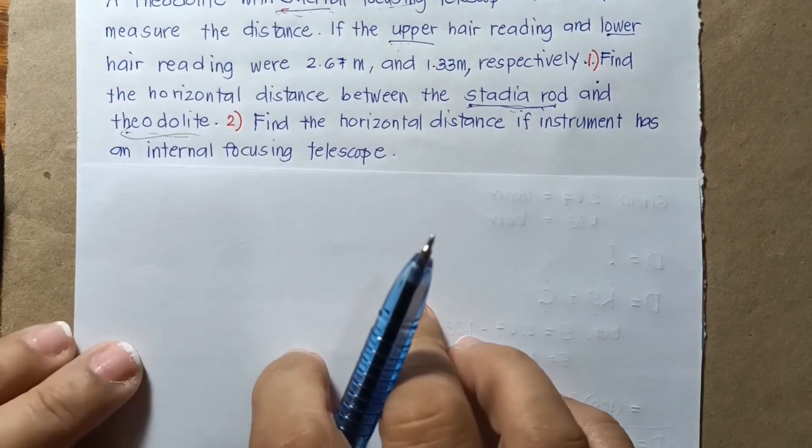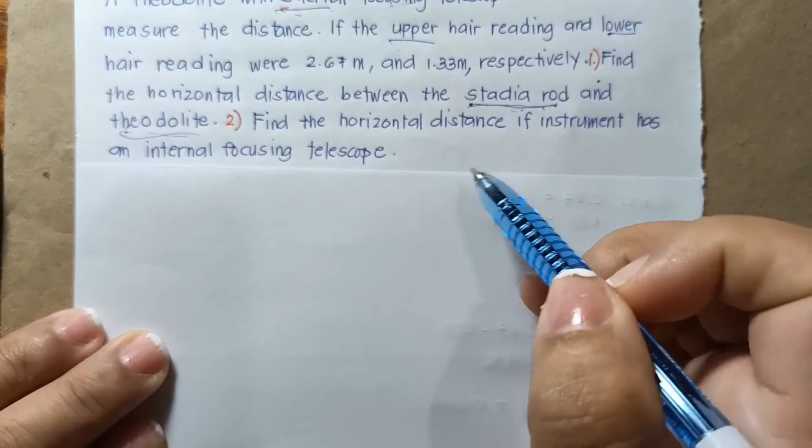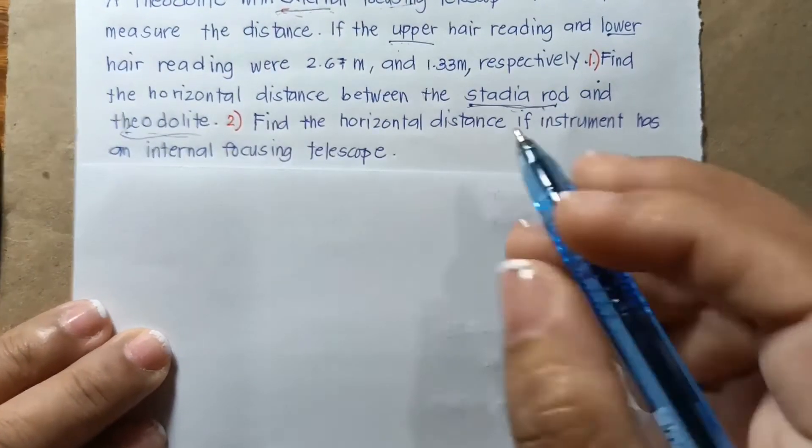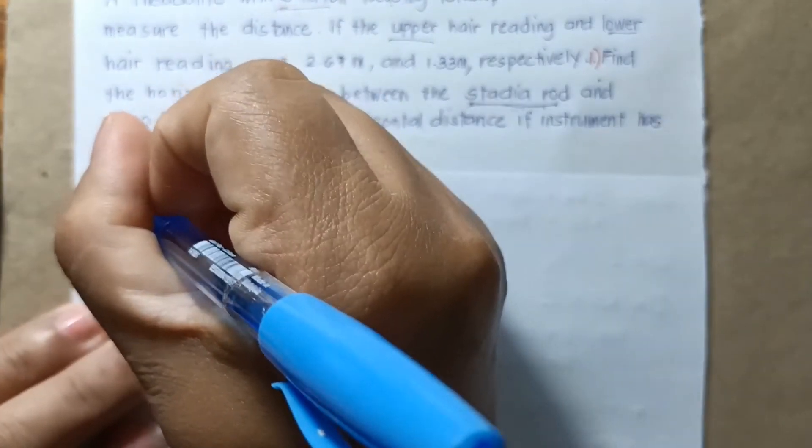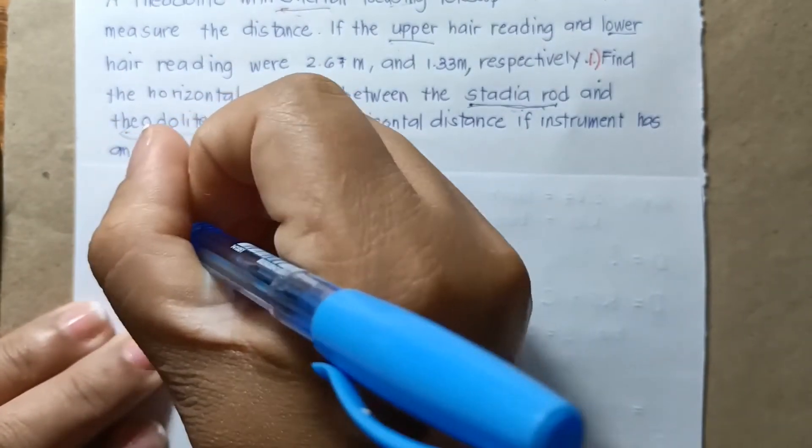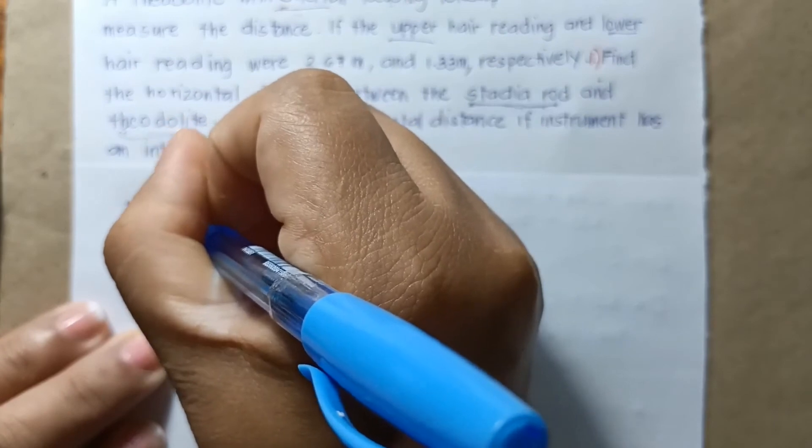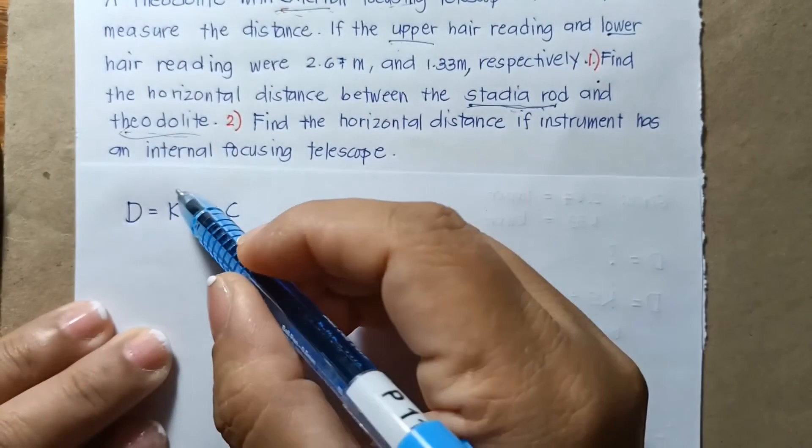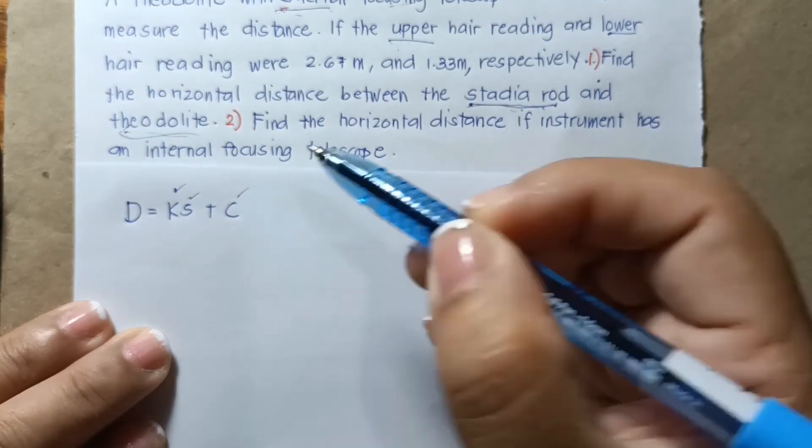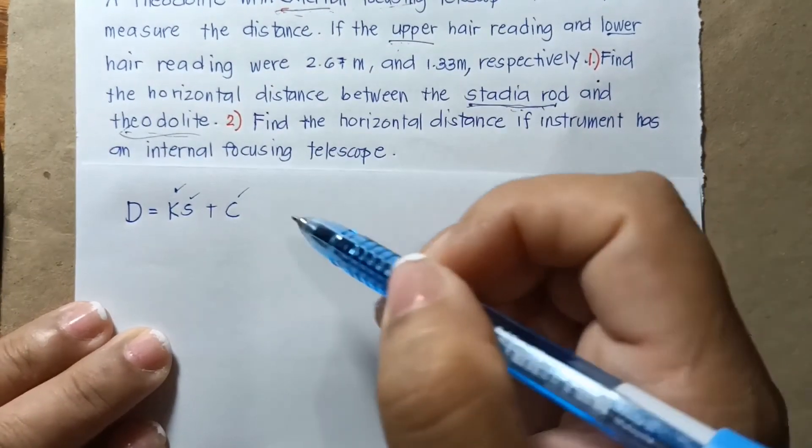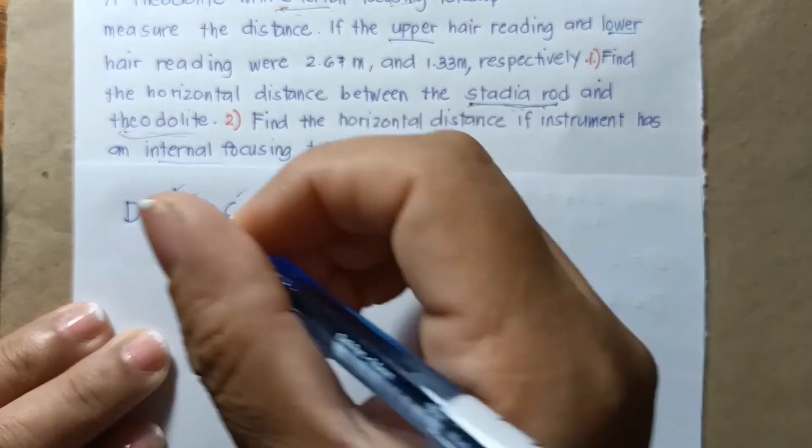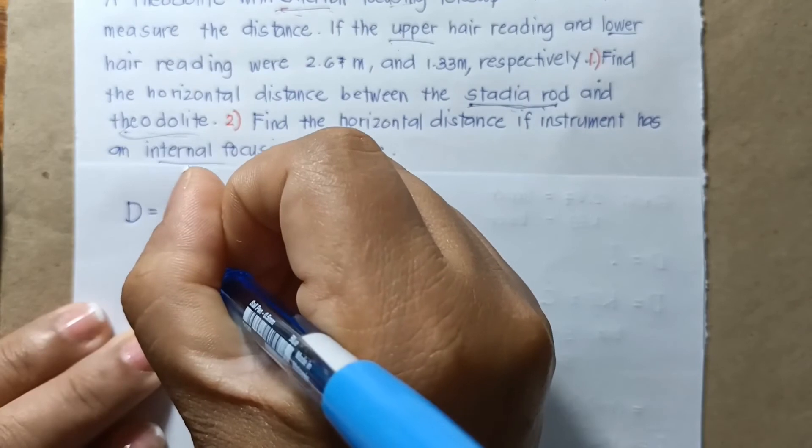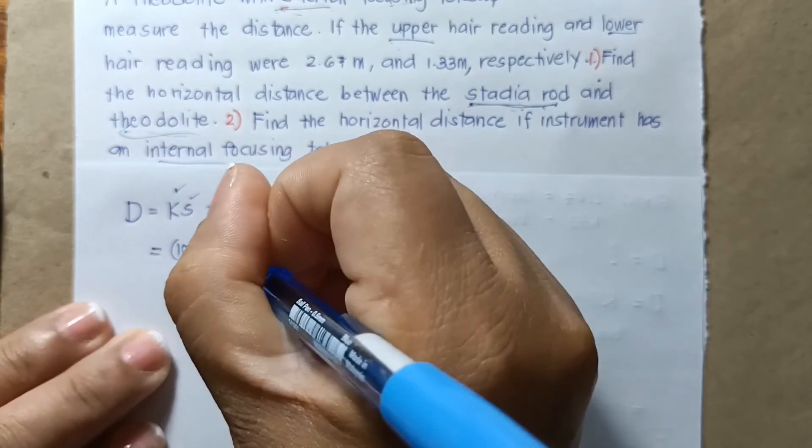So how about if the telescope or the instrument has an internal focusing telescope? So we will be using the same formula. You have D equals KS plus C. We know already what is K, what is S, and C is basically 0 because it's internal. So therefore, you can have this value that is 100 times 1.34.